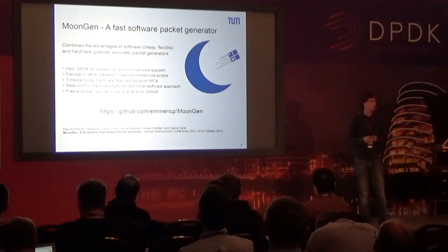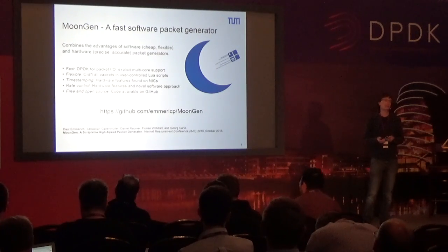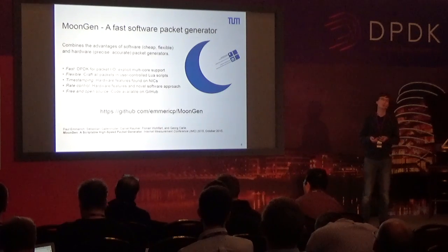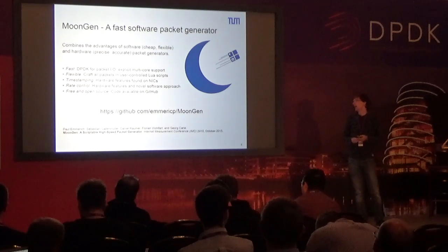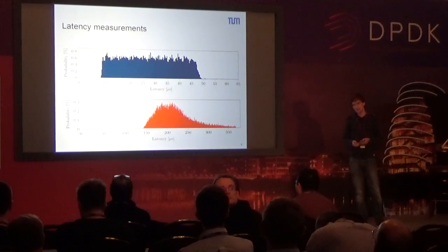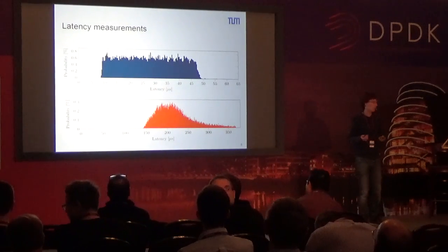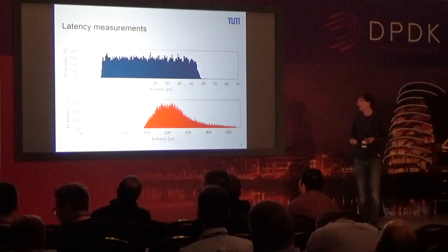I've cut the rate control part for my talk due to time reasons. What I will be going into today is timestamping and flexibility, by showing a quick example of how you could do a VXLAN test with MoonGen. First, for the timestamping — here's basically an example of what you can get.